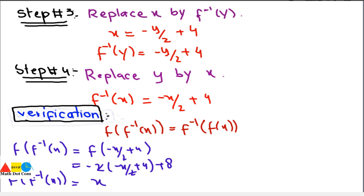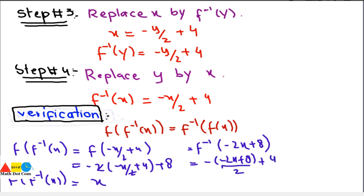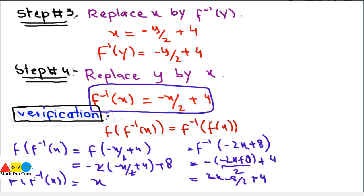Now for f⁻¹(f(x)): f(x) is the given function -2x + 8, so we find f⁻¹(-2x + 8). We substitute (-2x + 8) into f⁻¹(x) = -x/2 + 4, giving -(−2x + 8)/2 + 4, which simplifies to x. So the left-hand side equals the right-hand side, and the inverse f⁻¹(x) = -x/2 + 4 is verified.